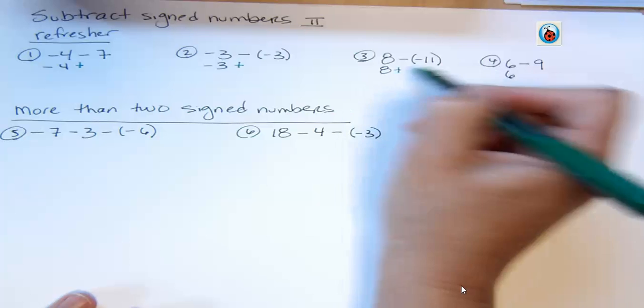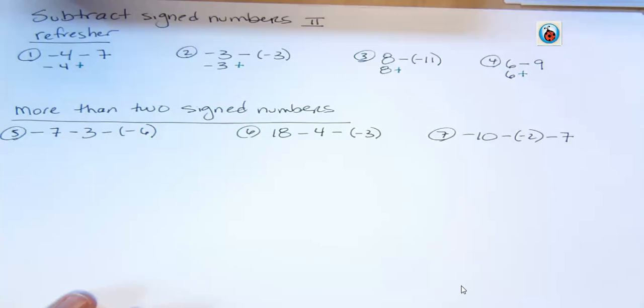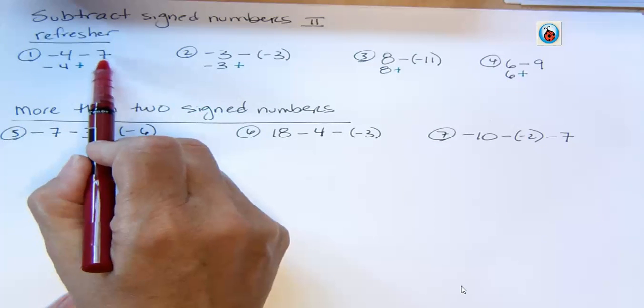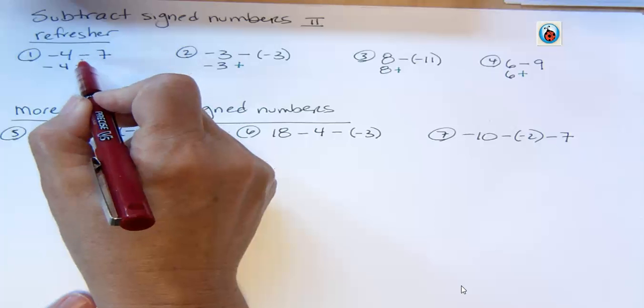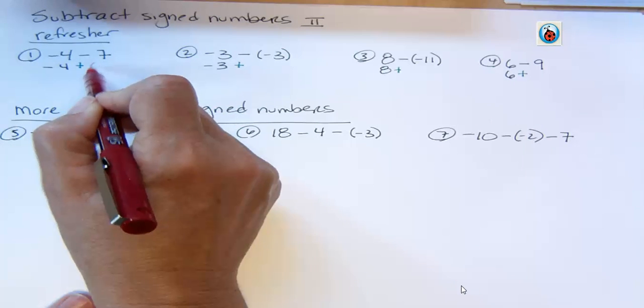So if you have a minute, go ahead and pause the video and try to finish these and see how you do. The next thing we did was we changed the sign of the next term. So this is seven, because this was considered our subtraction symbol.